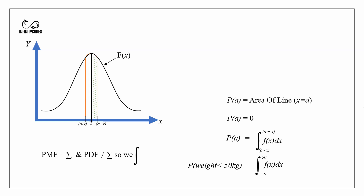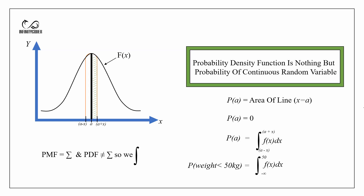If we calculate the probability in the continuous variable — that is area-based probability — then the probability of A, which is a specific weight, is equal to the area of a line, which is always equal to 0. The important point here is that we cannot calculate the probability of a certain weight because it is a line and the probability of a line is always 0.